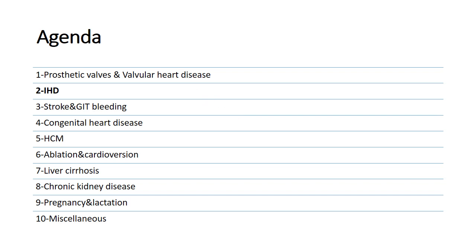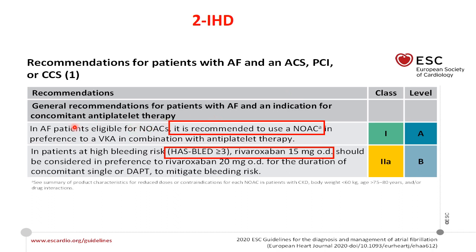For patients with ischemic heart disease and AF who are eligible for oral anticoagulation, it is recommended to use NOACs over vitamin K antagonists in combination with antiplatelet therapy. In patients with high bleeding risk — HAS-BLED score three or more — rivaroxaban 15 mg once daily should be considered in preference to rivaroxaban 20 mg once daily for the duration of single or dual antiplatelet therapy to decrease bleeding risk.